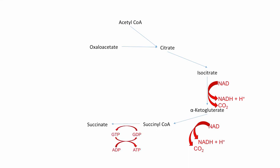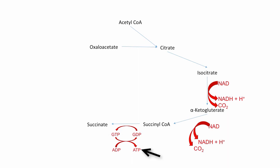The next step is the conversion from succinyl-CoA to succinate. This process adds a phosphate to GDP, making it GTP. That phosphate is immediately transferred to an ADP molecule, making it ATP. In summary, this process produces one ATP per cycle.